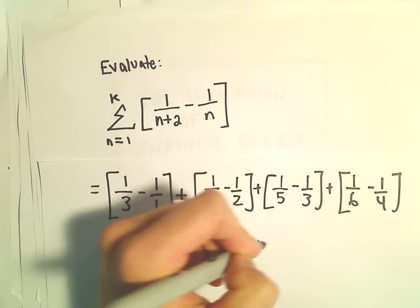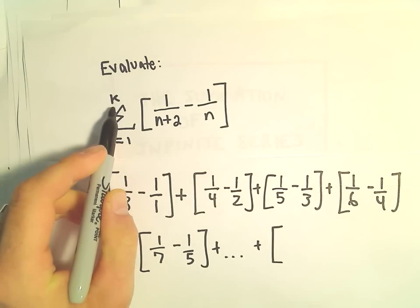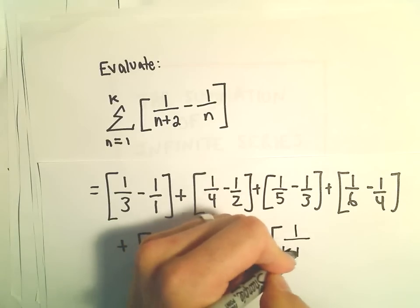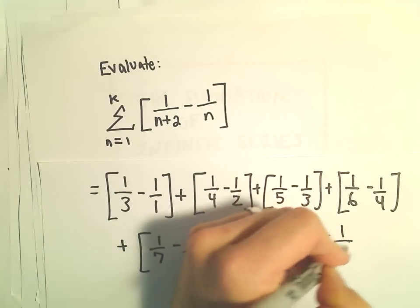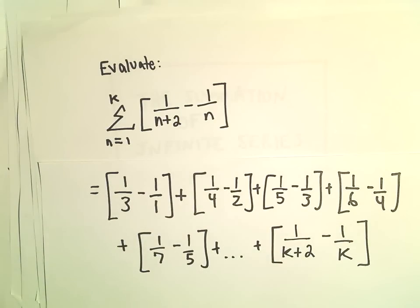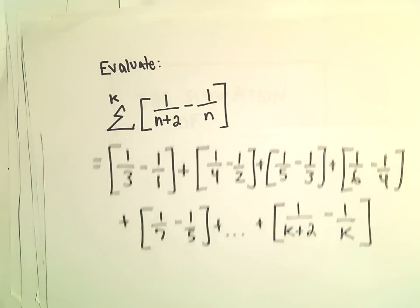Okay, so then generically, if we go up to some value, if we stop at k, well, we'll have 1 over k plus 2 minus 1 over k as our final term. So we kind of have to figure out what would happen generically in this case.